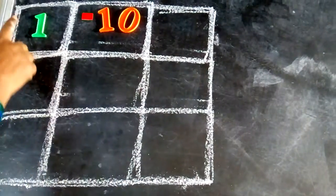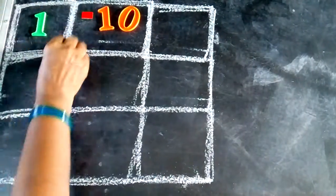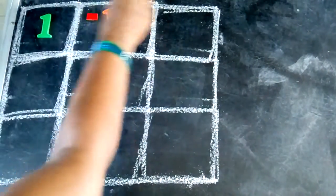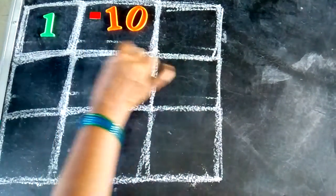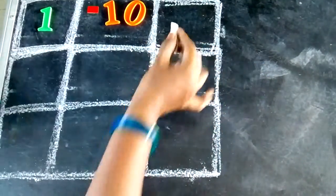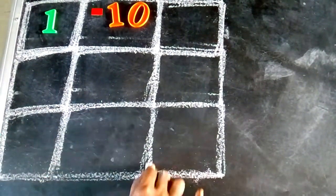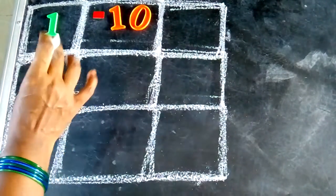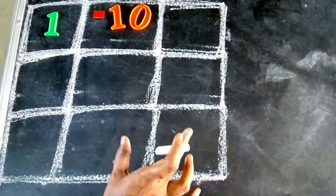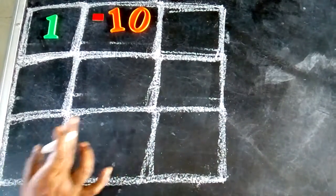There are 9 small squares in a single square — 1, 2, 3, 4, 5, 6, 7, 8, 9. So these are 9 small squares in a single square. Each square has a number.